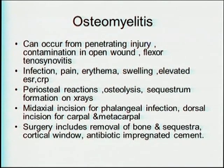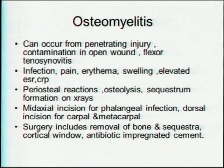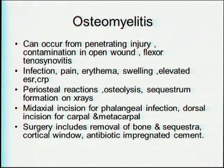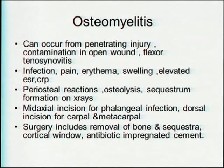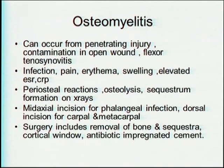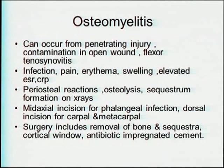From septic arthritis, osteomyelitis can develop, or it can occur from penetrating injury, contaminated open wounds, or flexor tenosynovitis. Features include infection, pain, erythema, swelling, and elevated ESR and CRP. On x-ray, there will be periosteal reaction, osteolysis, and sequestrum formation. You need to drain the osteomyelitis using a mid-axial incision for phalangeal infection and a dorsal incision for carpal and metacarpal infections. Surgery includes removal of the diseased bone and sequestrum, leaving a cortical window where antibiotic-impregnated cement can be placed.